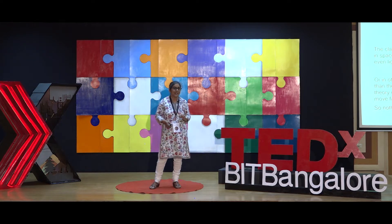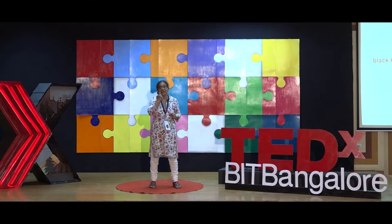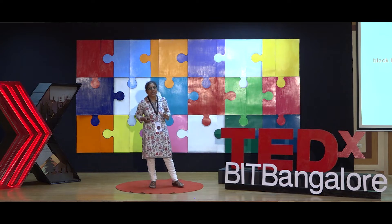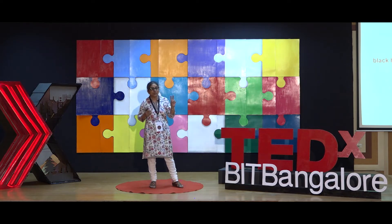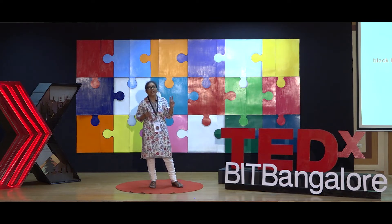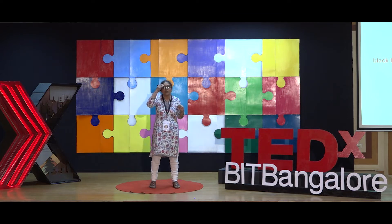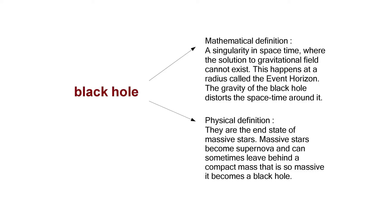And that makes it very difficult to detect. Mathematically and observationally — these are the two ways we can think about a black hole. Mathematically, a lot of work has been done on black holes, and basically it is treated as a singularity.